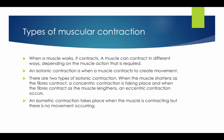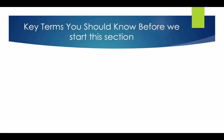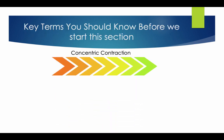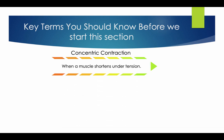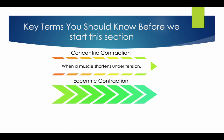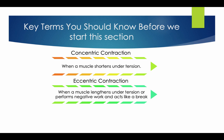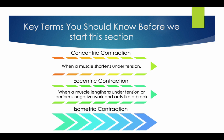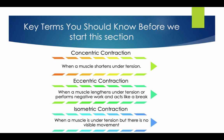An isometric contraction takes place when the muscle is contracting but there is no movement occurring. Key terms: concentric contraction — when a muscle shortens under tension; eccentric contraction — when a muscle lengthens under tension, or performs negative work and acts as a brake; isometric contraction — when a muscle is under tension but there is no visible movement.